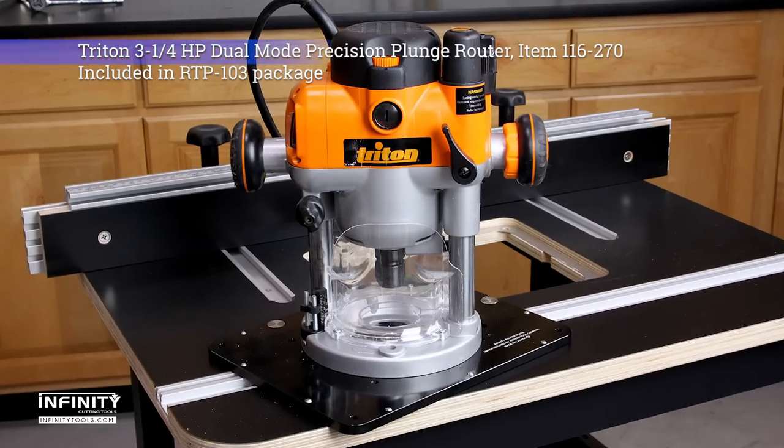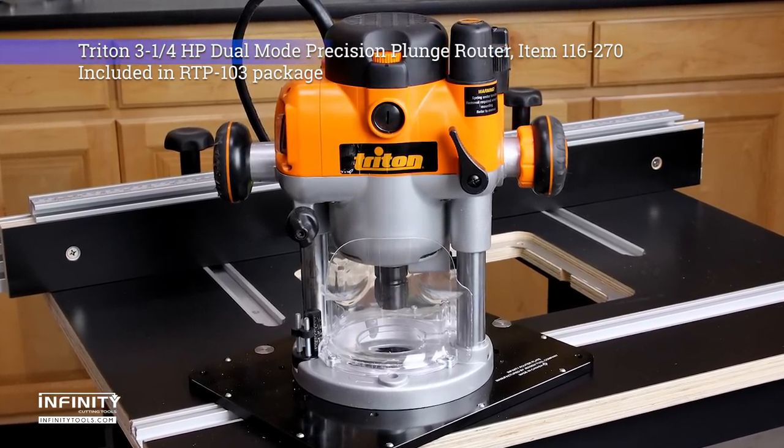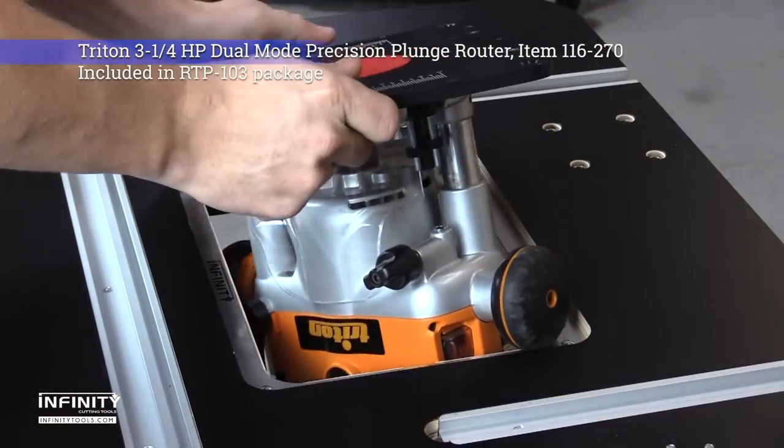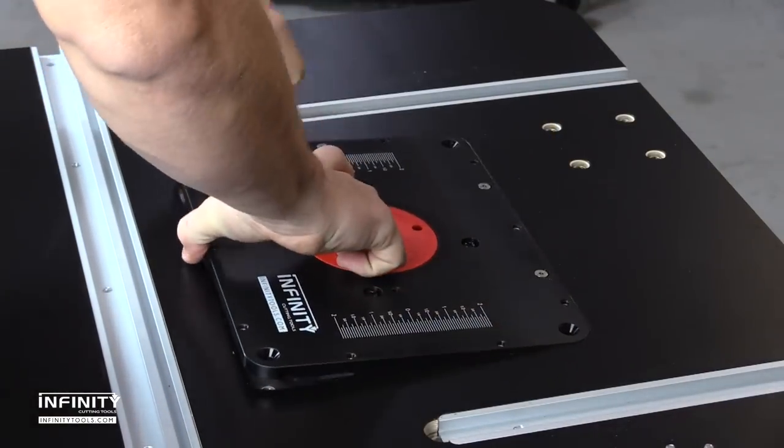The powerful 3-1/4 horsepower Triton router is unique because it does not require a dedicated router lift. Triton set out to design a router perfectly suited for use in a router table with a built-in lift mechanism.